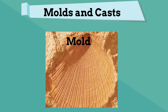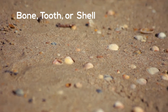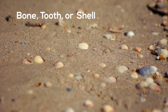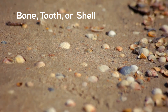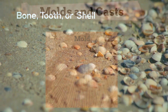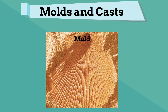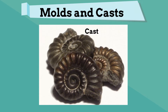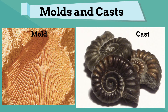Molds and casts are also important fossils. An organism will die and you may have a bone or a tooth, and it will make an impression. This impression hardens so that you have a permanent record — this is a mold. Next, this impression can fill up and create a cast, which is a copy of the impression. Take a look at the mold and the casts.